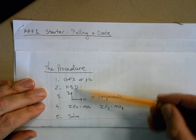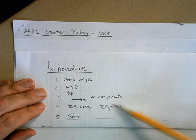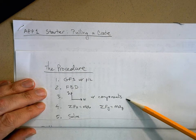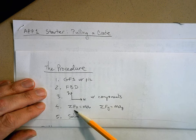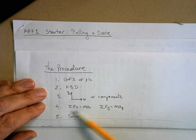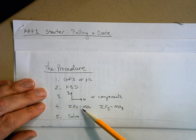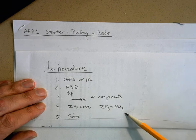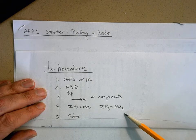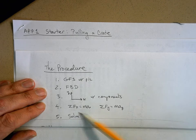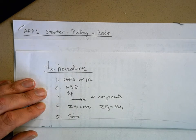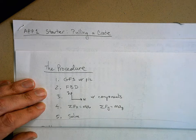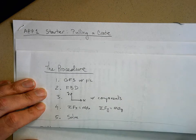Establish your x and y axis system, then break up any forces into their x and y components. Using that free body diagram, look in the x direction. Add up all the forces in the x direction, set it equal to ma in the x direction. Do the same thing in the y direction if necessary. Then take these equations and solve for whatever your unknown is. You should be able to solve some very complicated problems using that procedure.